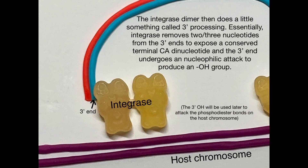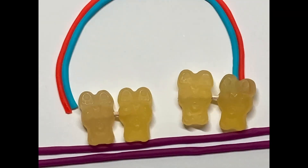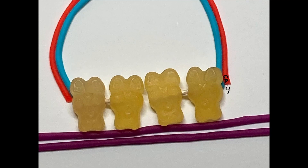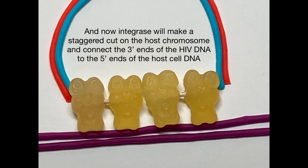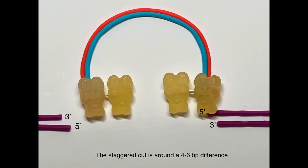Before integrating into the host DNA, integrase performs 3' processing: it removes 2 to 3 nucleotides from the 3' ends of the HIV genome to expose a conserved terminal cytosine adenine dinucleotide. The 3' end then undergoes a nucleophilic attack using water to produce an OH group. Once 3' processing is complete, integrase makes a staggered cut of around 4–6 base pairs and connects the 3' ends of the HIV DNA to the 5' ends of the host cell DNA.